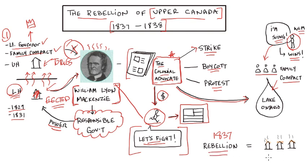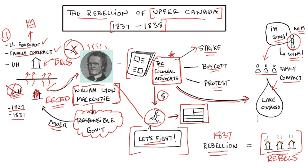Once Mackenzie started raising a fuss, the British began taking away even the small powers of the lower house. Then, once the rebellion started, the British came in with their troops, found the homes of the rebels, and burned them. The rebellion was quashed. But there is another rebellion happening in Lower Canada around the same time, and the British have to start asking what is going on in the colonies and what can be done to make things better — and that's where we'll be going next.